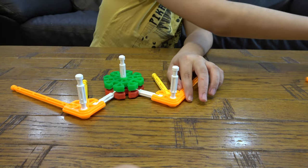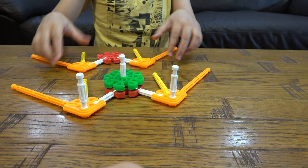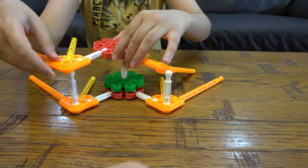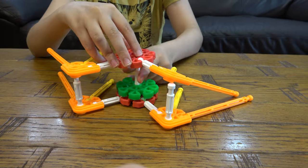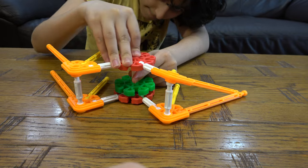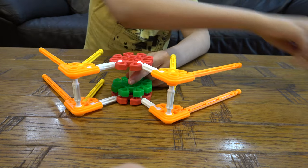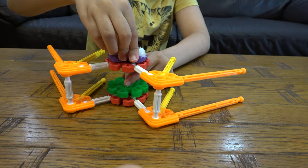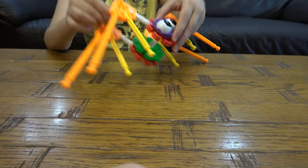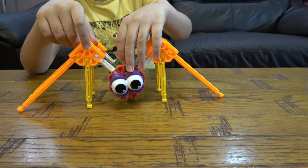Put this here, build another one of those, put it on, and then put the eyes on like this, and we have our finished Kinect Spider.